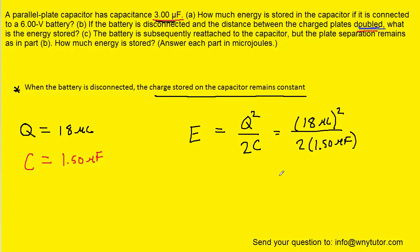And then when we process that on our calculators, we should get 108 microjoules. And it comes out in microjoules again because we're using microcoulombs and microfarads. So this is the correct answer to part B.